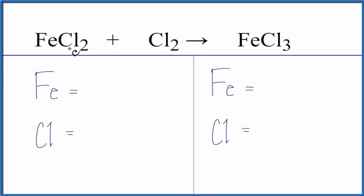To balance this equation, FeCl2 plus Cl2, that's iron 2 chloride plus chlorine gas, let's add the atoms up on both sides of the equation.